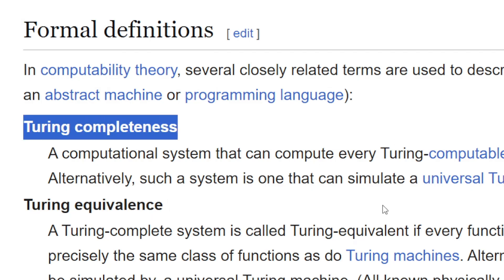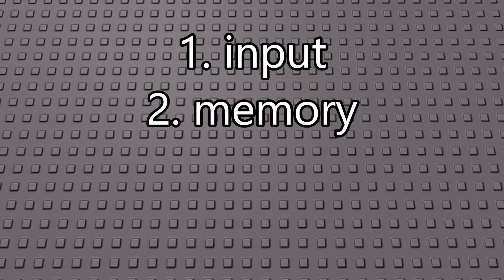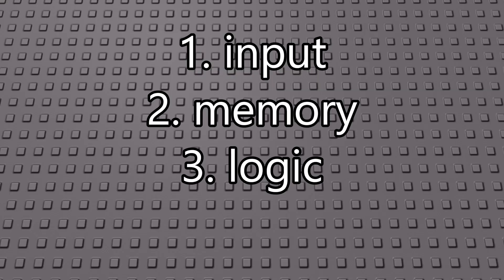For something to be Turing complete, it all comes down to a few basic ingredients: input, memory, logic, and loops.